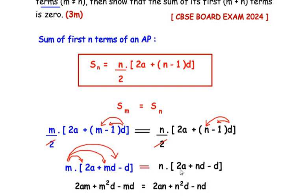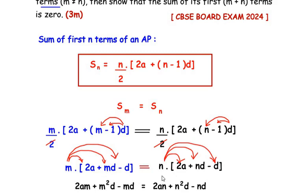On the right hand side, n multiplies with 2A giving 2An, n multiplies with nD giving n squared D, and n multiplies with negative D giving negative nD. The next step is to take all terms containing the common difference D to one side, and all terms without D to the other side.